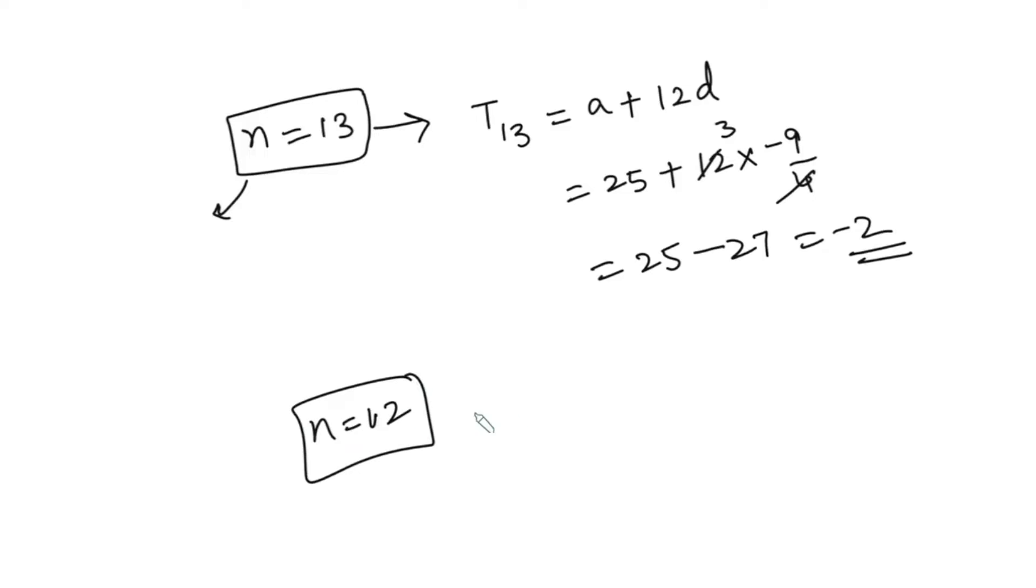So for n equals 12, we find T12. So, T12 will be equal to a plus 11d, so that is 25 plus 11 times negative 9/4. And if we simplify this, we will get 1/4.